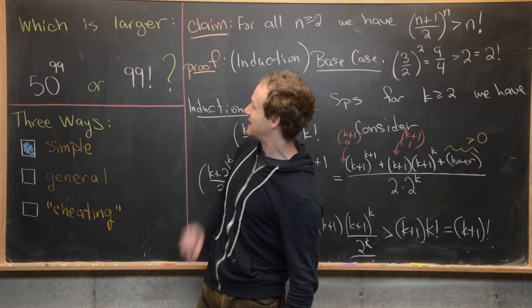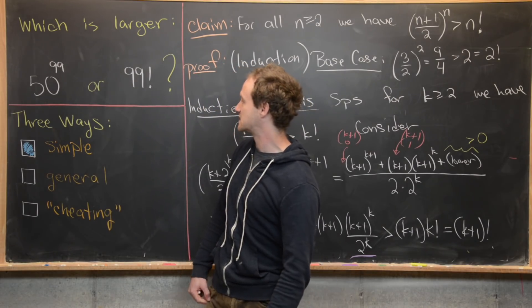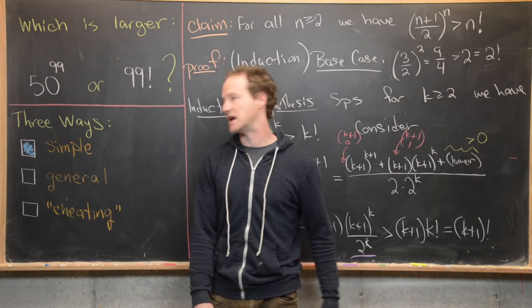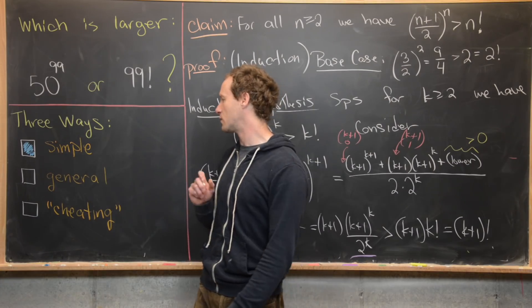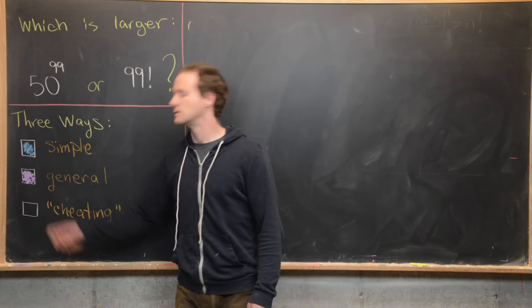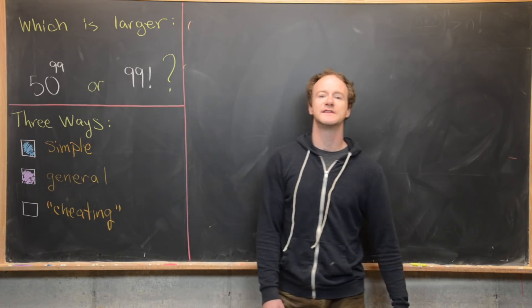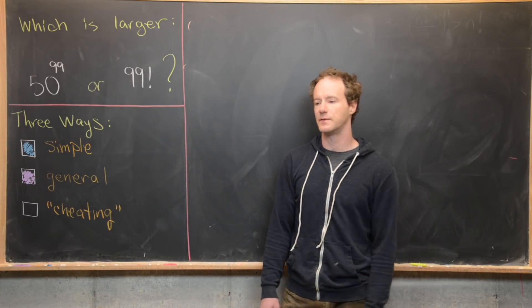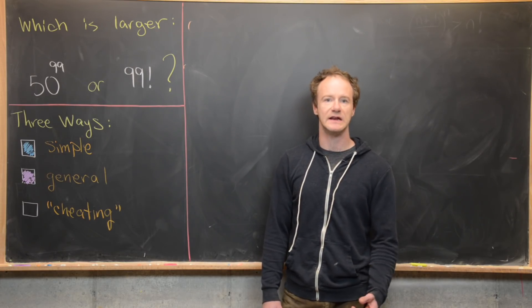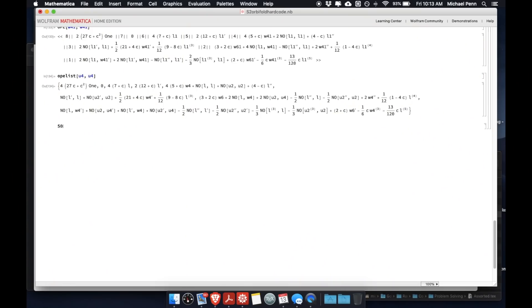The 99th case of this general claim is our goal statement, so we're done with the general induction method. Now we're going to prove this by cheating a little bit, but we can't do that with the chalkboard — we're going to need another tool.